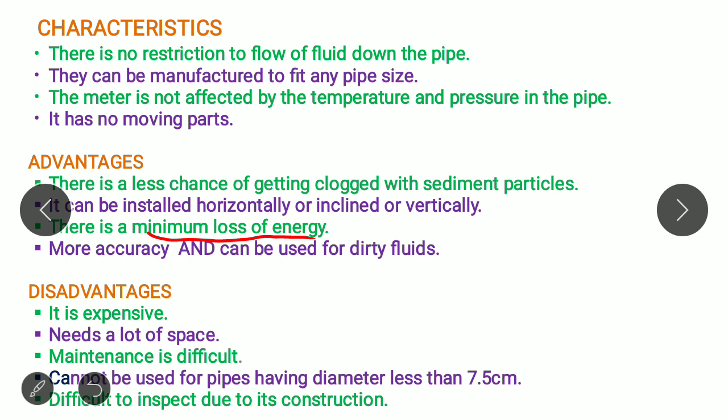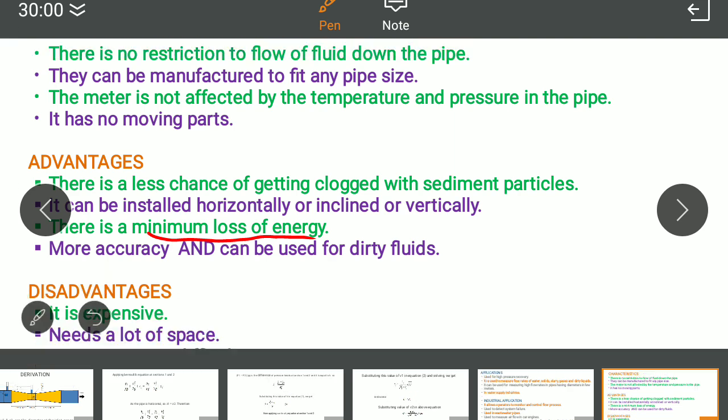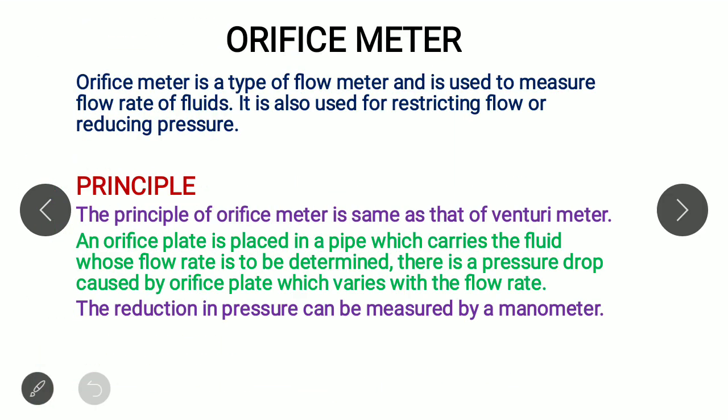If we talk about the disadvantages, it is quite expensive as compared to Orifice meter and it needs lots of space. The maintenance of Venturi meter is quite difficult and it cannot be used for pipes whose diameter is less than 7.5 cm. Otherwise, the same problem of difference in convergence, divergence that will not at all be created in that situation. It is also difficult to inspect during its construction. This was all about the Venturi meter.